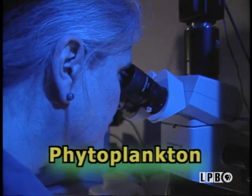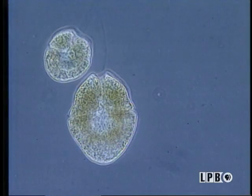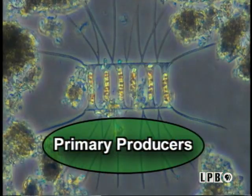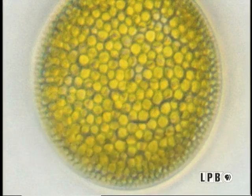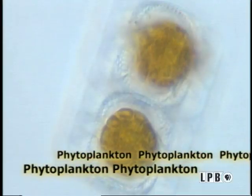Phytoplankton are the microscopic plants found in both marine systems and freshwater systems. They are real plants, just like trees and shrubs and grass. Phytoplankton play an important role in the food chain — they are the primary producers, which means they carry on the important process of photosynthesis in the environment. Phytoplankton are actually the largest oxygen producers on the planet.